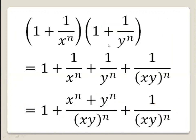We will begin by expanding these two terms. So we have (1 + 1/xⁿ) multiplied by (1 + 1/yⁿ). By the FOIL method we get 1 plus 1/xⁿ plus 1/yⁿ plus (1/xⁿ)(1/yⁿ), which is 1/(xy)ⁿ. The middle terms can be written as (xⁿ + yⁿ)/(xy)ⁿ.